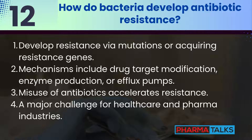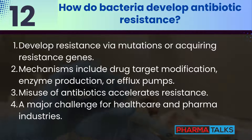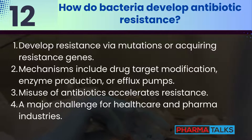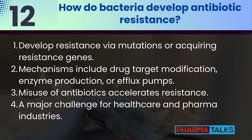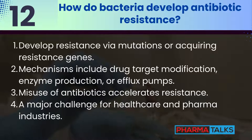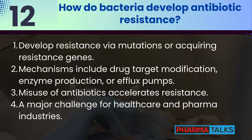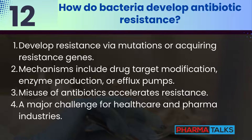How do bacteria develop antibiotic resistance? Bacteria develop resistance through mutations or by acquiring resistance genes from other microbes. Mechanisms include modifying drug targets, producing enzymes that destroy antibiotics, or using efflux pumps to expel the drug. Misuse of antibiotics accelerates resistance. This is a major challenge in healthcare and pharma.